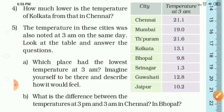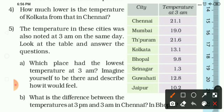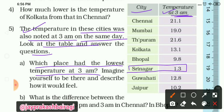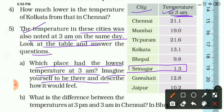Question 5 presents another table of the same cities on the same day but at 3 AM. The question is: the temperature in these cities was also noted at 3 AM on the same day — look at the table and answer the questions. First: which place had the lowest temperature at 3 AM? Srinagar had the lowest temperature at 1.3 degrees Celsius. Imagine yourself there — it would be very cold, water could freeze into ice, and there could be snowfall.